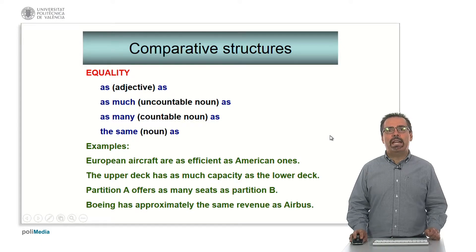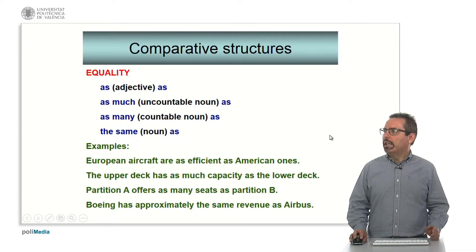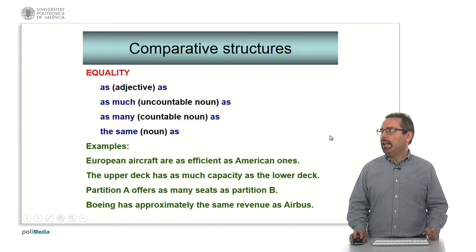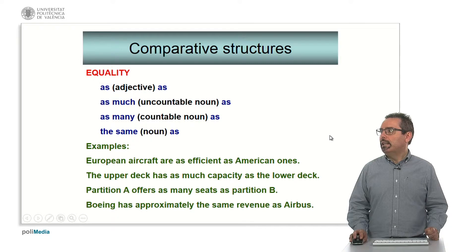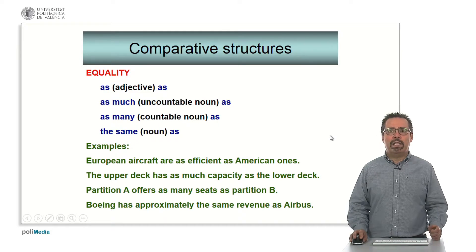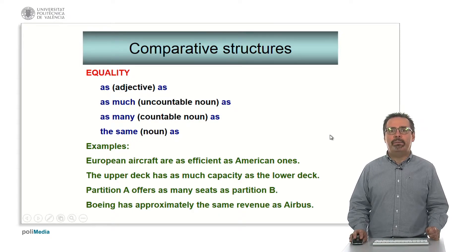We can also use the expression 'the same something as' — note 'as' is the particle, not 'that'. Here we have typical examples: 'European aircraft are as efficient as American ones.' 'The upper deck has as much capacity as the lower deck' — uncountable noun. 'Partition A offers as many seats as partition B' — countable noun. 'Boeing has approximately the same revenue as Airbus.'